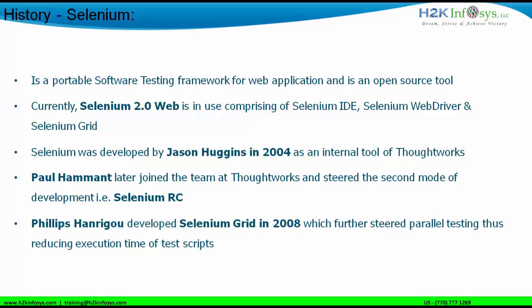Phillips Hanrago developed Selenium Grid in 2008, which further enabled the parallel testing approach, thus reducing the execution time of test scripts. The parallel approach was done to reduce execution time — for example, if you have 10,000 test cases on a single machine, you can distribute them across four different machines, dramatically reducing execution time. That is why Selenium Grid came into play.